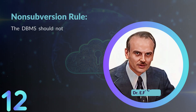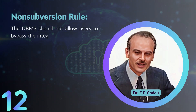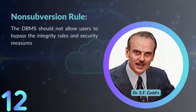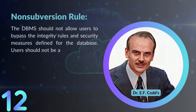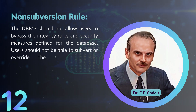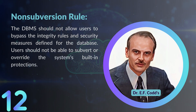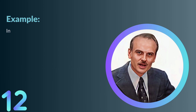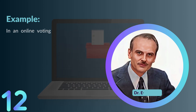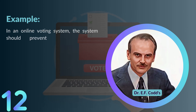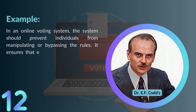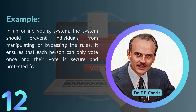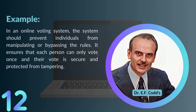Rule number twelve: the Non-subversion Rule. The DBMS should not allow users to bypass the integrity rules and security measures defined for the database — users should not be able to subvert or override the system's built-in protections. For example, in an online voting system, the system should prevent individuals from manipulating or bypassing the rules, ensuring that each person can only vote once and their vote is secure and protected from tampering.